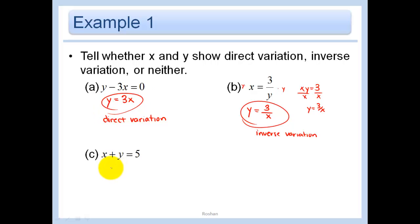And in this problem here, we have Y equals negative X plus 5. Note that this does not go through the origin. We're shifted up 5 units. So this is neither.